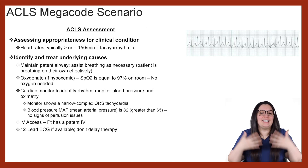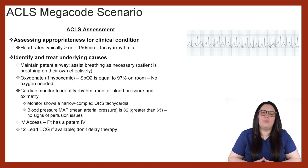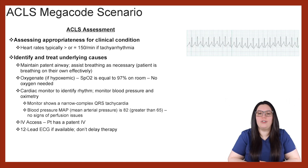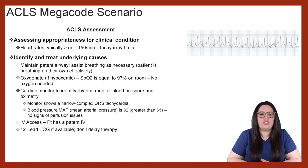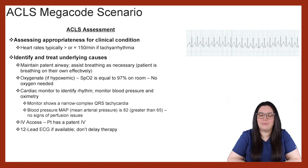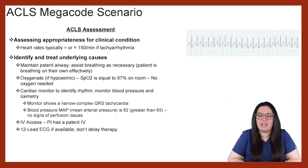What are going to be your initial actions? We're going to begin with our ACLS assessment. We want to assess the appropriateness for clinical condition. The heart rate typically is going to be greater than or equal to 150 per minute if it is considered a tachy arrhythmia, so we need to identify the underlying cause and treat it. We want to maintain a patent airway and assist with breathing as necessary. The patient in this scenario is breathing on their own very effectively. We want to provide oxygenation if the patient is hypoxemic, but their SpO2 is 97% on room air, so this intervention is not necessary.